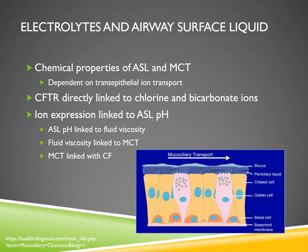Talking about the electrolytes and their relation to airway surface liquid — there are specific chemical properties associated with the airway surface liquid that correlate directly to mucociliary transport. The chemical properties of the airway surface liquid are dependent on these transepithelial ions being moved across these membranes, specifically chlorine and bicarbonate ions. CFTR is directly linked to these electrolytes being able to pass through these membranes, and this ion transport is linked to the chemical nature of the airway surface liquid, whose pH is linked to fluid viscosity, which in turn is linked to mucociliary transport and cystic fibrosis.